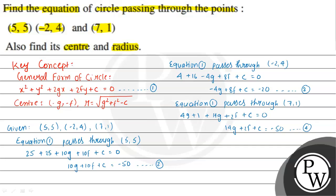Now we have 3 equations and 3 variables. We will solve for the values of g, f, and c. First, we solve equation 2 minus equation 3. That gives us 14g + 2f = -30. We will call this equation 5.